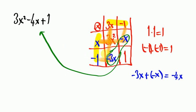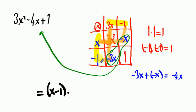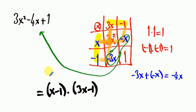Finally, I highlighted these two parts at the beginning of the video — the top part and the left part. These are going to be my factors. So x minus 1 times 3x minus 1 are our two factors, which means I have factorized this expression. Thank you, guys.